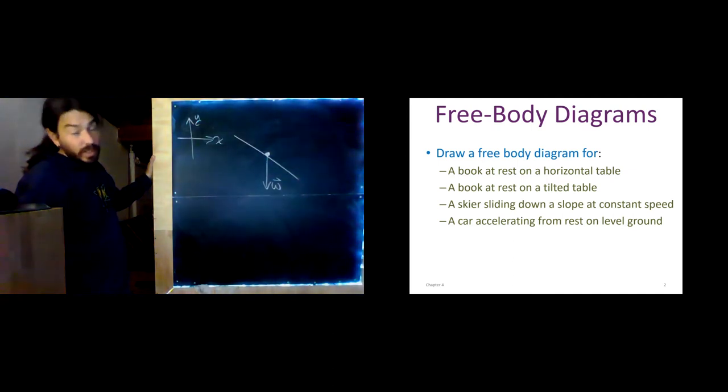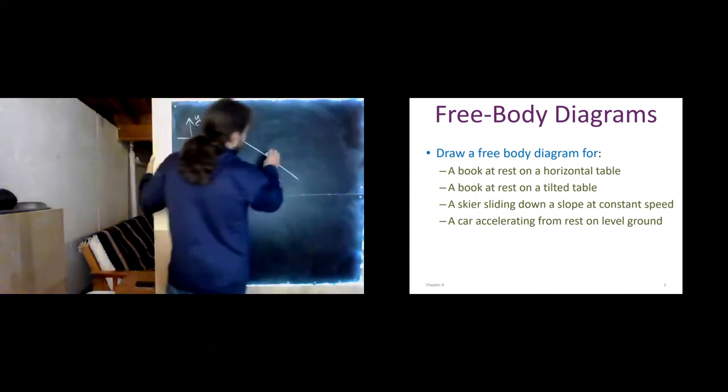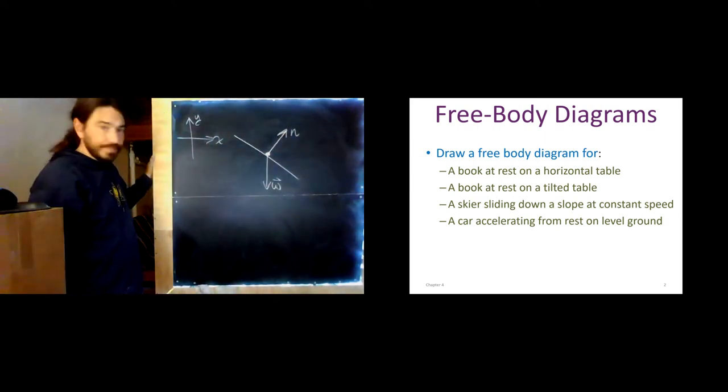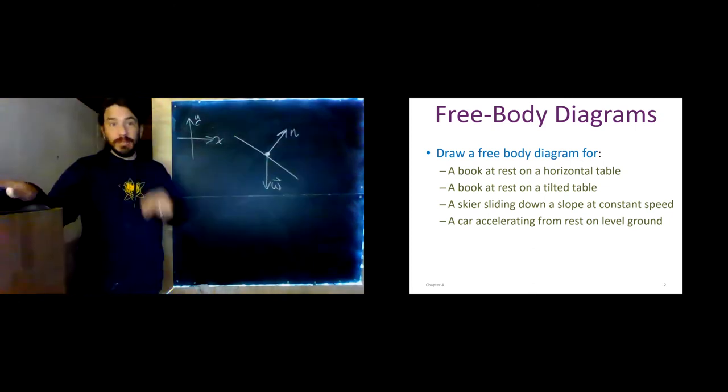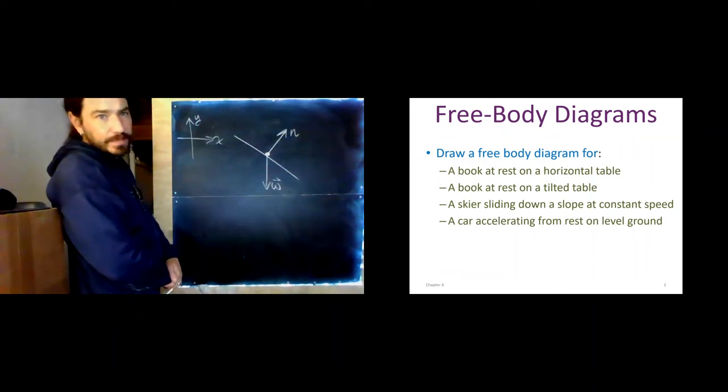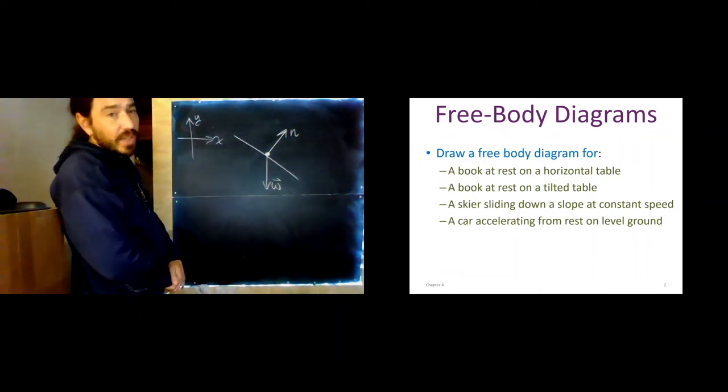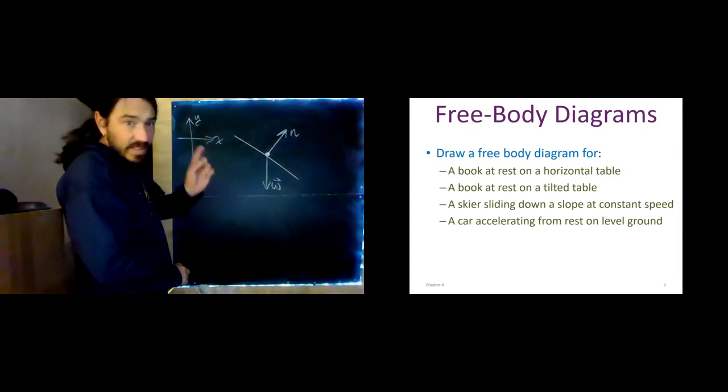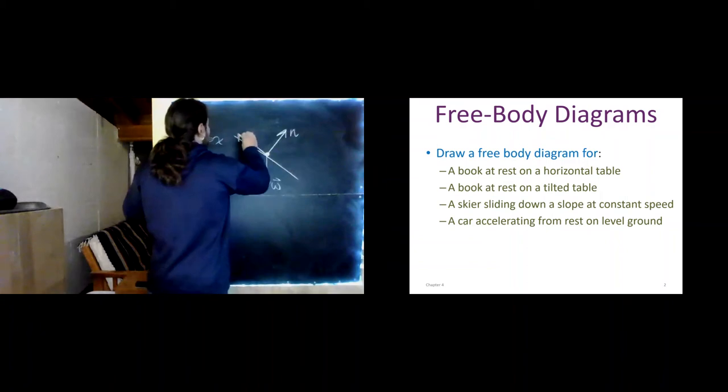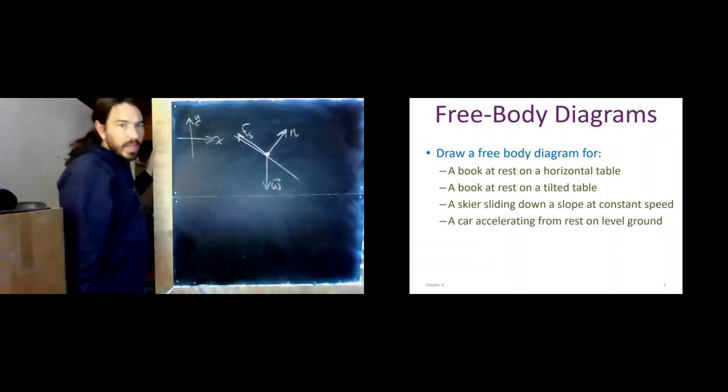Other forces. Well, there's the normal force. Normal means perpendicular. Normal in this context does not mean everyday or usual. It means perpendicular. And so, we should draw our normal force perpendicular to the surface. We also have friction. And if the book's at rest, it must be static friction. Which way does it point? Uphill or downhill? Remember, static friction always resists slipping. So, the book wants to slip downhill. Static friction is preventing it. It is pointing uphill.